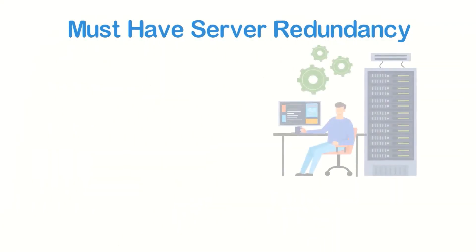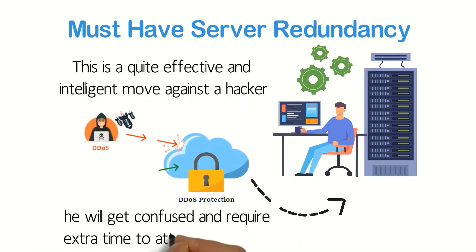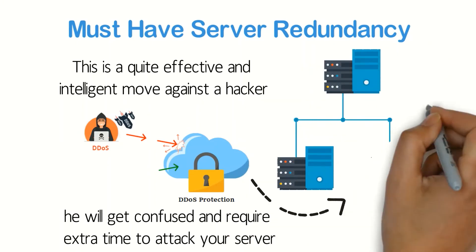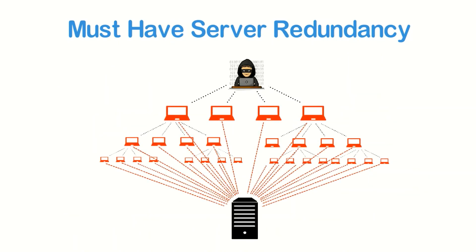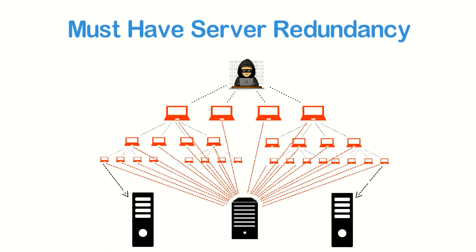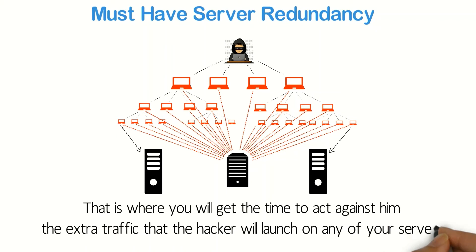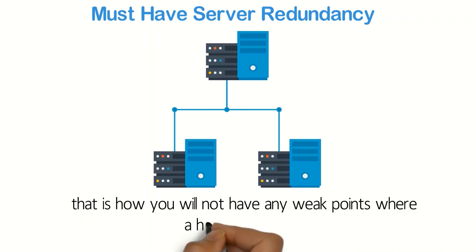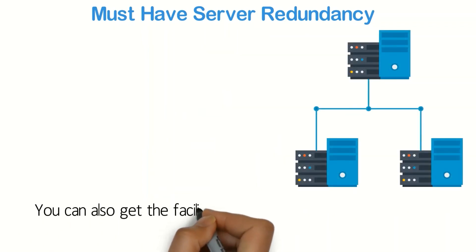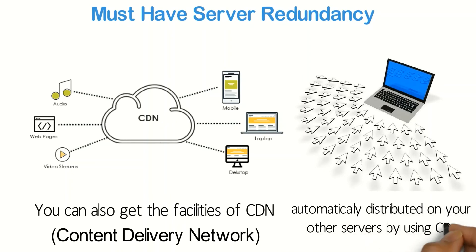Must have server redundancy: This is an effective and intelligent move against a hacker, because it will confuse them and require extra time to attack your server. Here, you rely on different distributed servers in different regions. If the hacker attacks a single server, he will have to repeat the same hard work with other servers, giving you time to respond. The extra traffic launched on any of your servers will be distributed to other servers, keeping your system unaffected. You can also use CDN — Content Delivery Network — to automatically distribute overloaded traffic across your other servers.